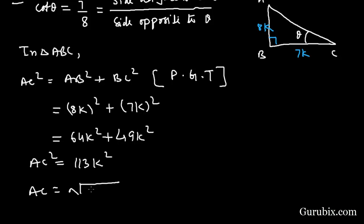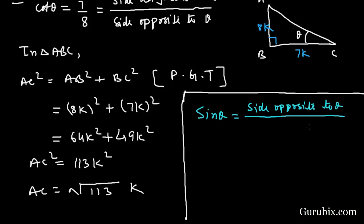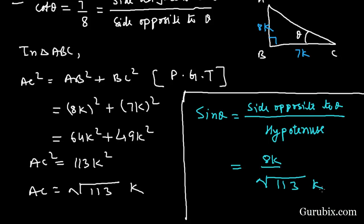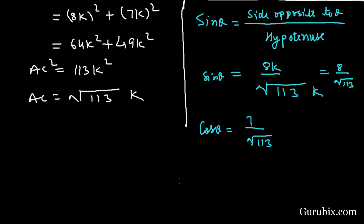Therefore AC = k√113. Now we calculate the trigonometric values. sin θ = side opposite to θ over hypotenuse = 8k over k√113 = 8 over √113. Similarly, cos θ = 7k over k√113 = 7 over √113.